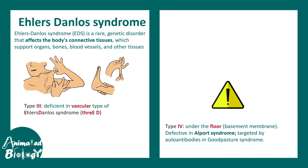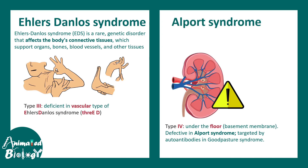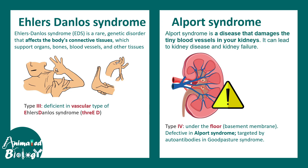Alport syndrome affects the kidney — specifically the tiny blood vessels of the kidney, leading to kidney dysfunction. Type 4 collagen, which forms the basement membrane (remember: 'under the floor'), is defective in Alport syndrome. Type 4 collagen is also targeted by autoantibodies in Goodpasture syndrome, which is an autoimmune disorder. These are key disorders associated with collagen type defects.